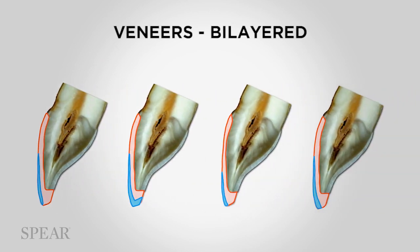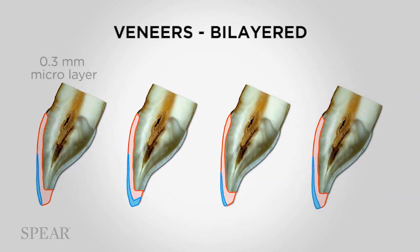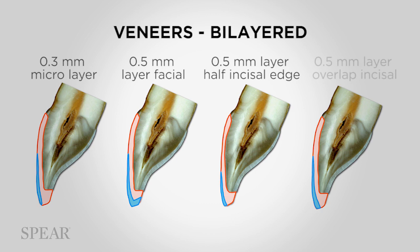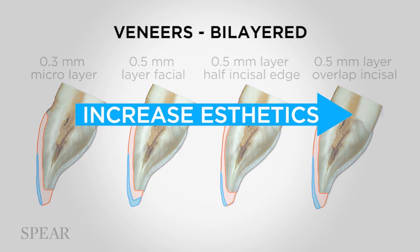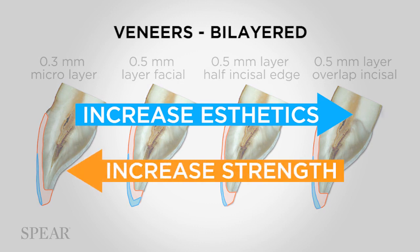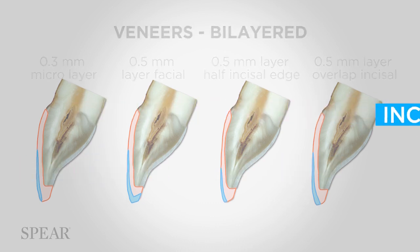Looking at the layering, you can have a micro layer of 0.3mm, or 0.5mm of the veneer material facially only, covering half of the incisal edge, or overlapping the incisal edge entirely. The more layering material you use, the more you increase aesthetics, but you decrease the strength, because the 80-megapascal material ends up on the functioning edge. That completes our discussion on materials for veneers; next we will move into crowns.